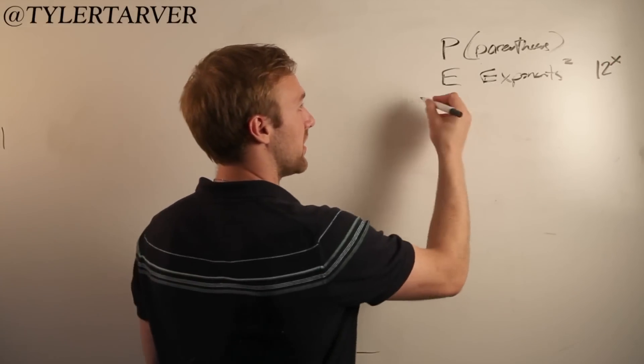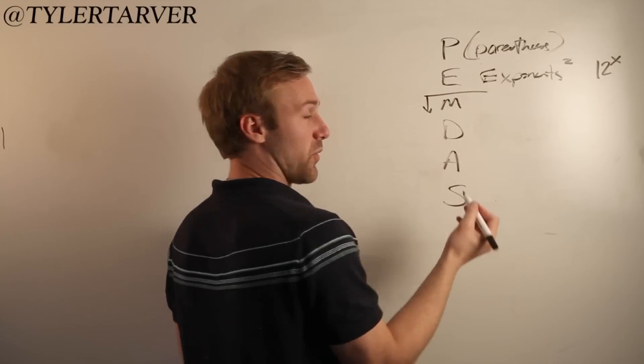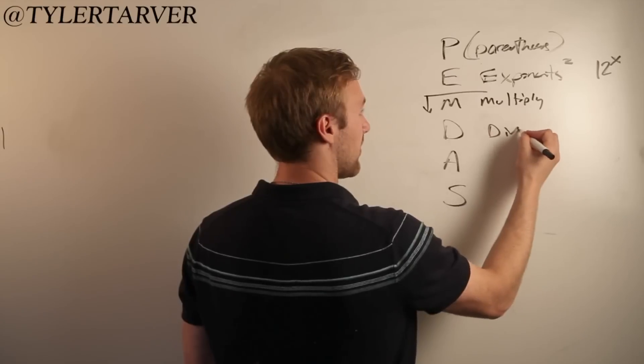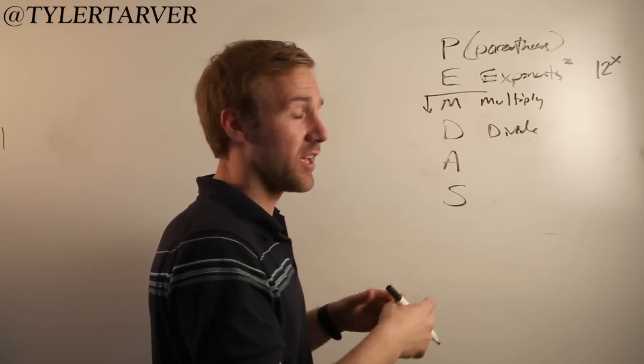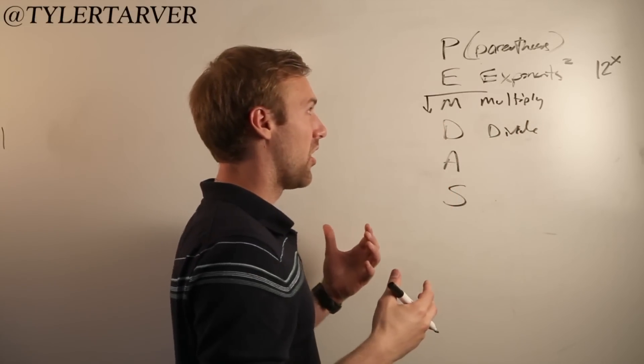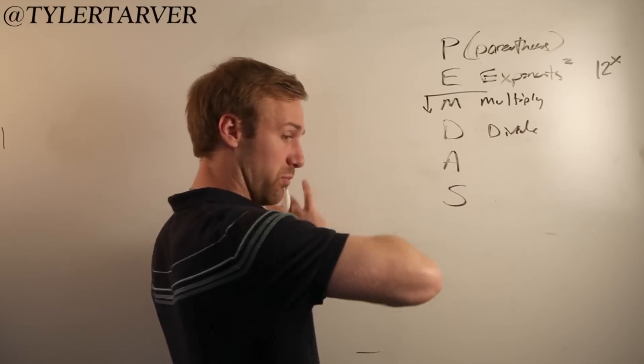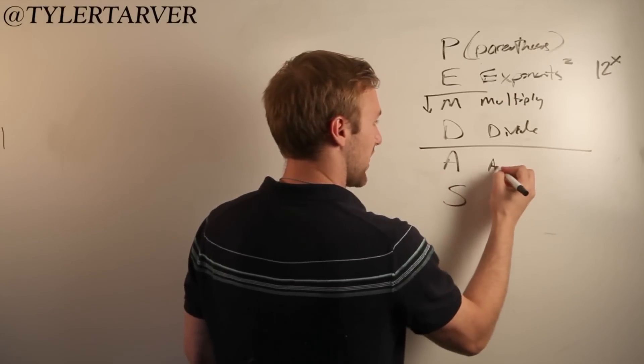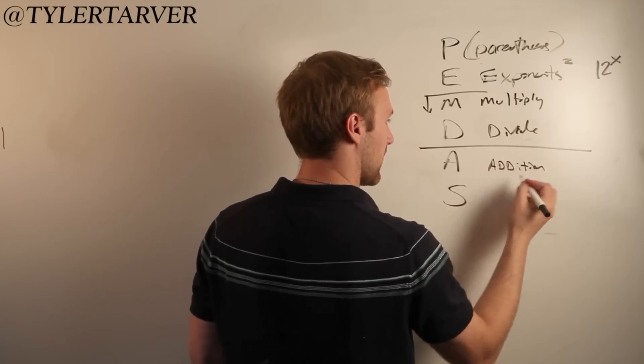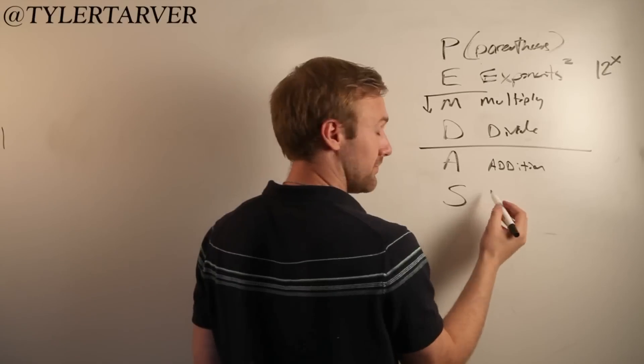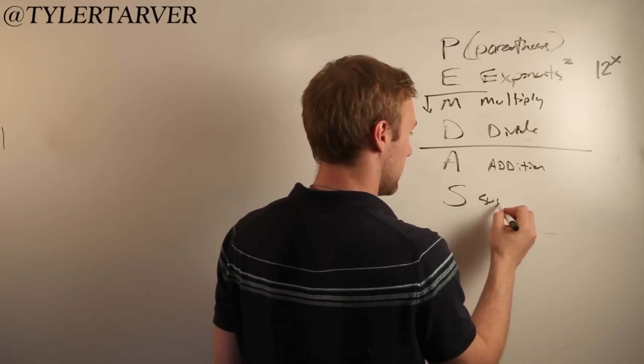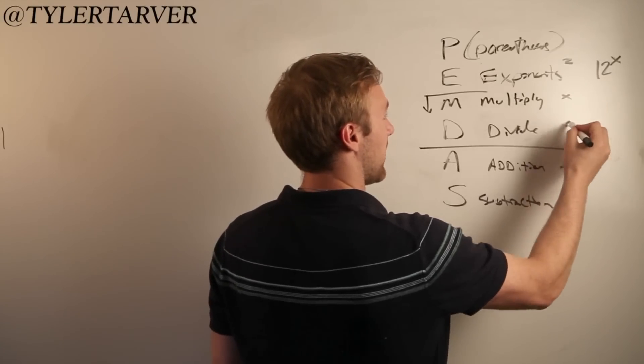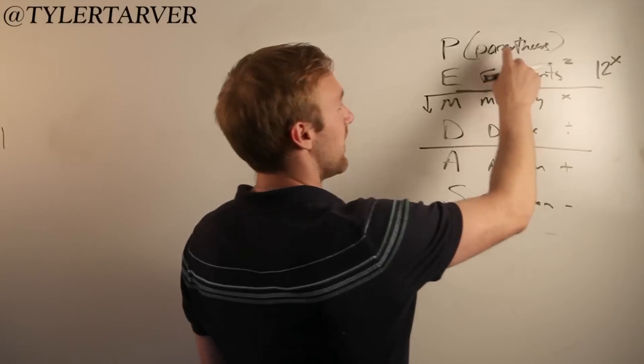Then you've got M which is your multiplication. Multiply, divide. Those two are equally important. They just really depend on which one comes first in progression from left to right, just like you're reading a book. And then addition and subtraction.